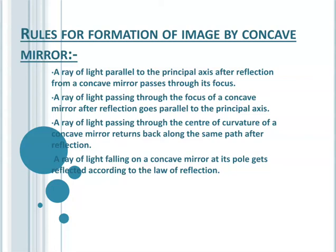Rule 2: a ray of light passing through the focus, after reflection, is parallel to the principal axis. A ray of light passing through the focus of a concave mirror after reflection goes parallel to the principal axis — this is just the reverse of Rule 1.